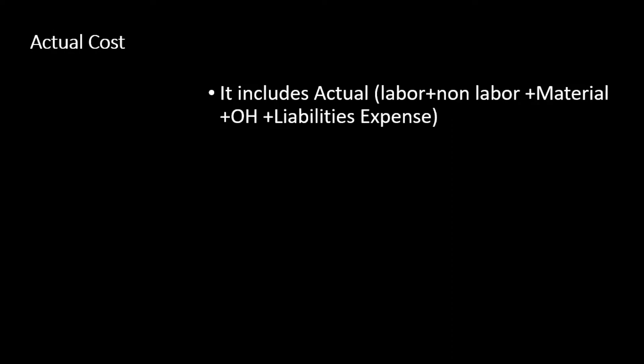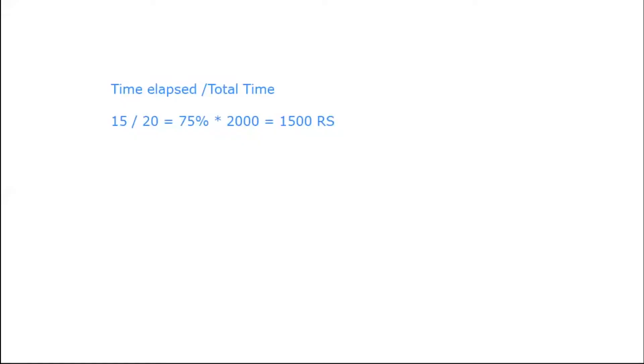Liability means your contractor has done the work but payment has not been released yet — it is still counted in Earned Value. The corresponding cost must be included in Actual Cost. Additionally, if you need a resource in execution that was not planned, the cost of that resource is also included in Actual Cost.